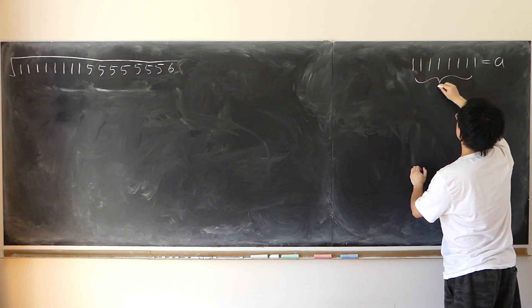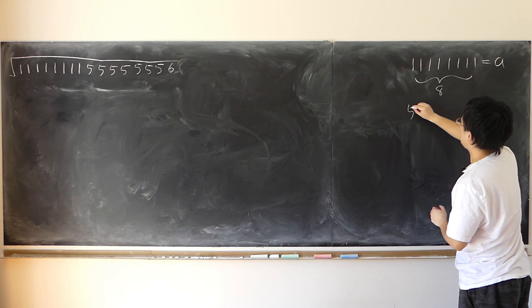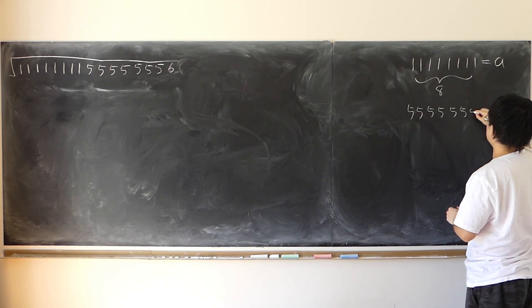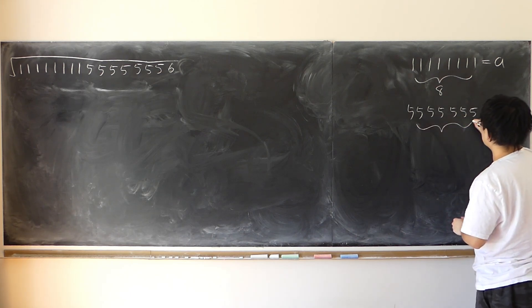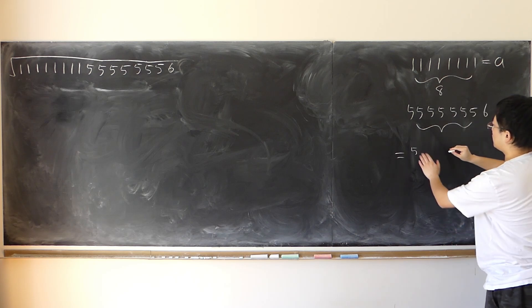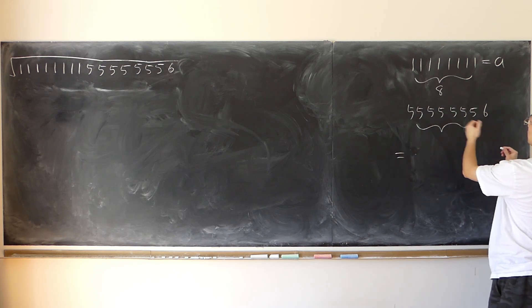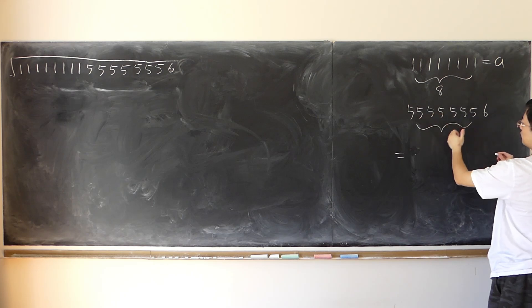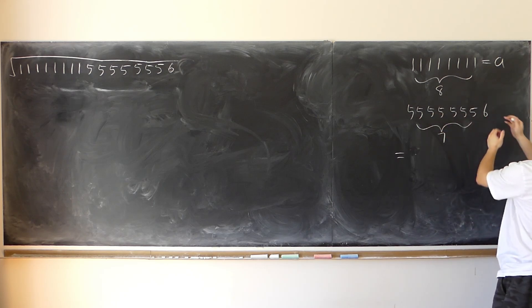So A represents eight 1s. The 1s portion can be written in terms of eight, and seven fives can be written as eight fives plus one.